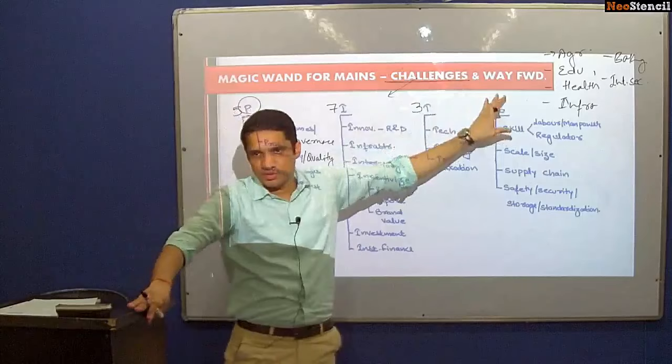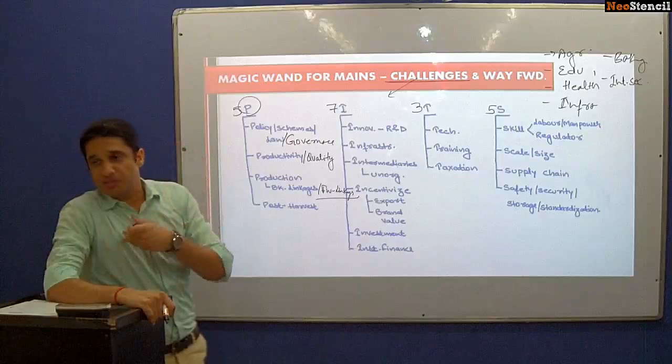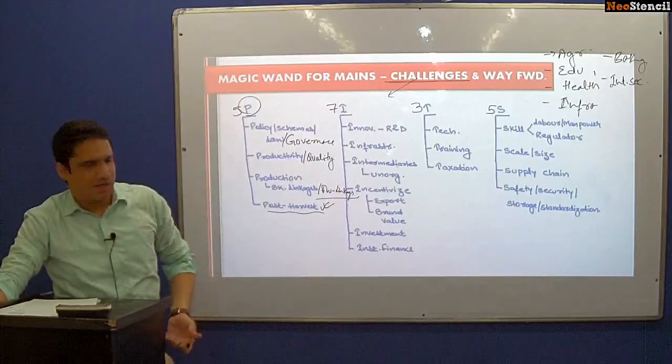We discuss production and post-production — two types of agriculture challenges. In production, seeds is a problem, irrigation is a problem, pesticide is a problem. In post-production, marketing is a problem, export is a problem, MSP is a problem. Then we have the next one related to post-harvest mechanism — this is the post-harvest challenge.